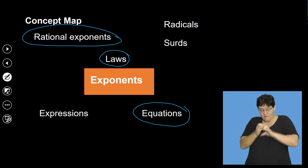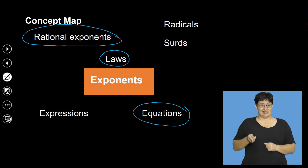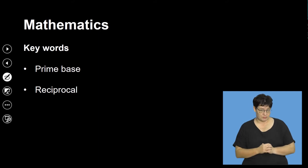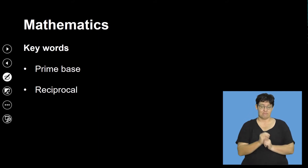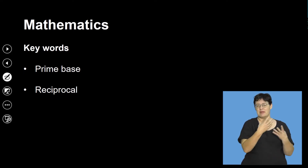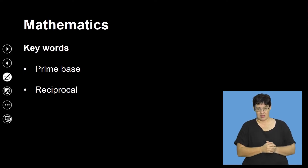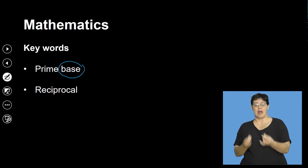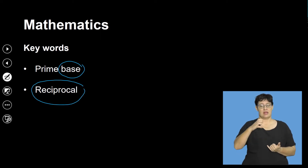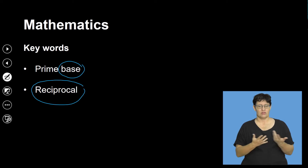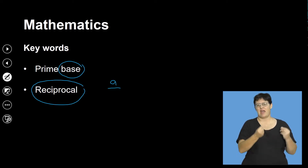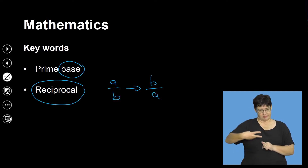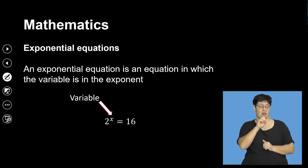Those equations will include some rational exponents. The key words for us are prime base — we're going to change our bases and write them as prime numbers. There's also what you call the reciprocal. A reciprocal is like flipping and multiplying a fraction. So if I have a over b, the reciprocal will therefore be b over a. We're going to be talking about the concept of a reciprocal in this lesson.